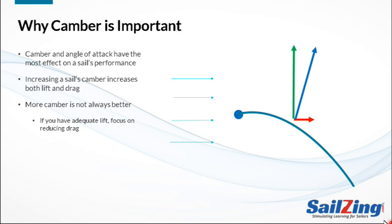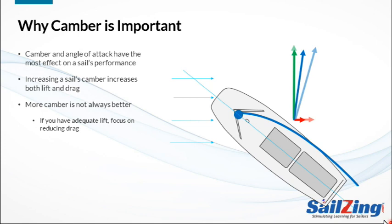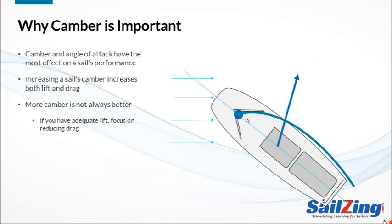Let's see what happens if you were to flatten the sail to reduce drag. With the fuller sail, the blue arrow represents the total force on the sail due to lift and drag. If we flatten the sail, the lift, drag, and total force all decrease. Notice how the total force, however, points more forward and less to the side with the flatter sail. This turns out to be really important. The total force from the sail gets transmitted to the boat. Think about this total force in terms of two parts: a forward force propelling the boat forward and a side force heeling the boat and pushing it to leeward.